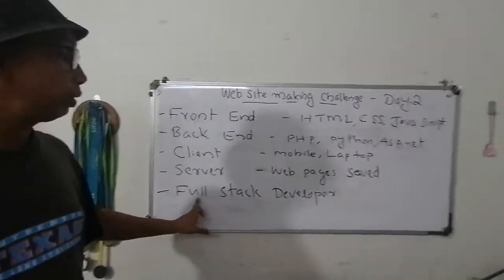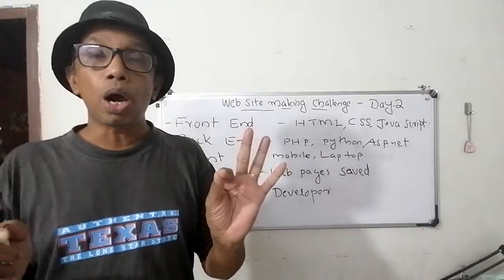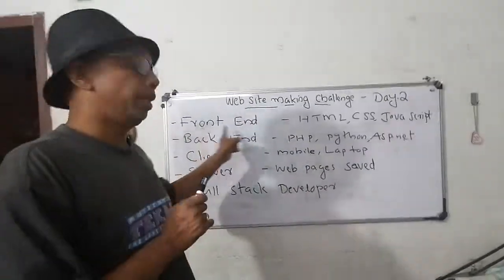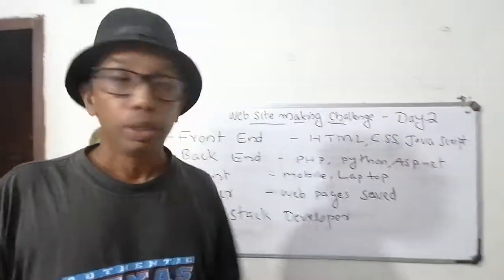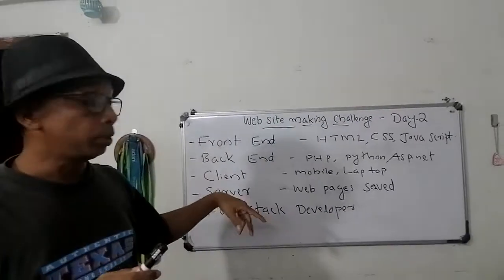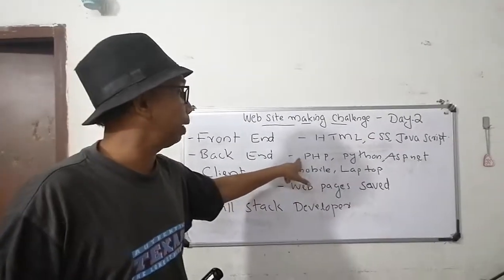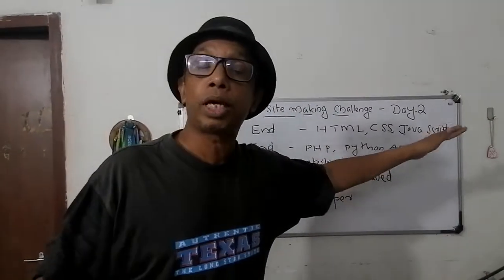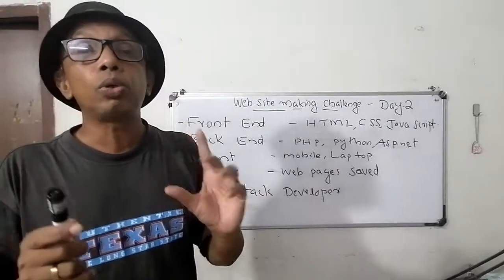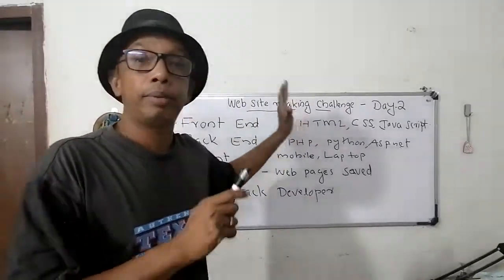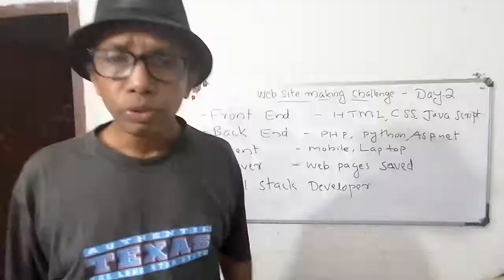Now, another term is 'full stack developer'. If a person knows how to make the frontend of the web page — meaning he should know HTML, CSS, JavaScript — and if that person also knows the backend of the website, meaning programming languages like PHP, Python, and ASP.NET, then if the person knows both frontend and backend, we can say he is a full stack developer.